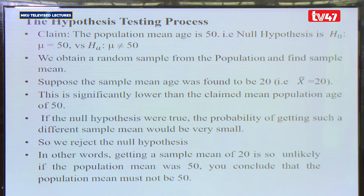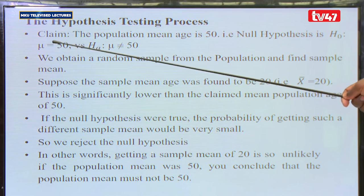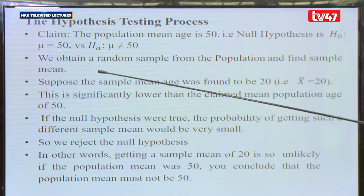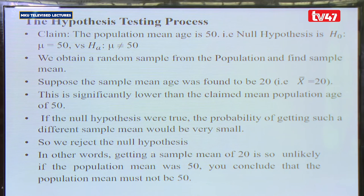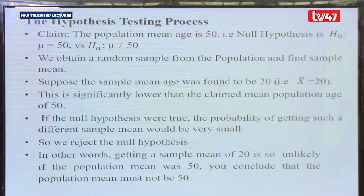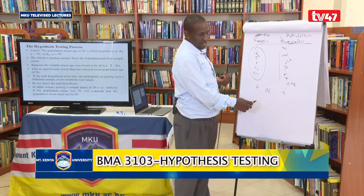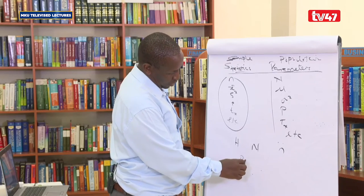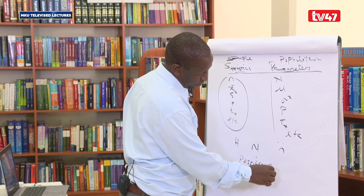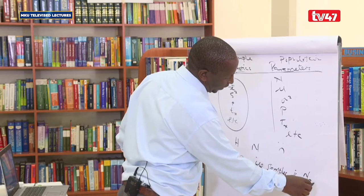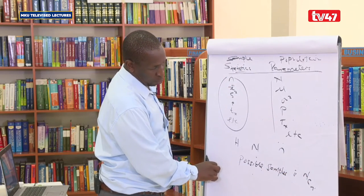The hypothesis testing process requires that first we have a claim — for example, the population mean age is 50 years. We obtain a random sample from this population. We say random sample because if the population is of size N and we want a sample of size n, the number of possible samples is N-choose-n. For a population of 5 items {A, B, C, D, E} with a sample size of 2, there are 5C2 = 10 possible samples.